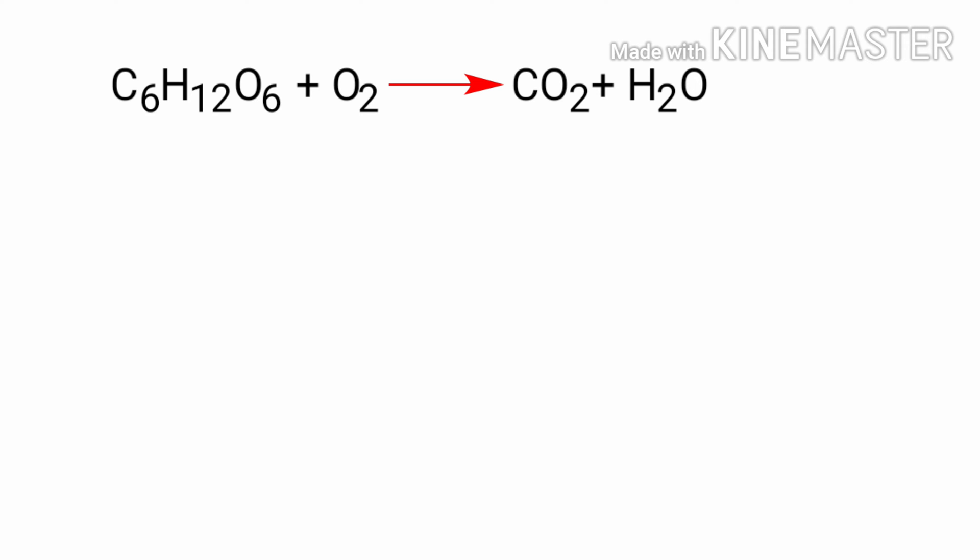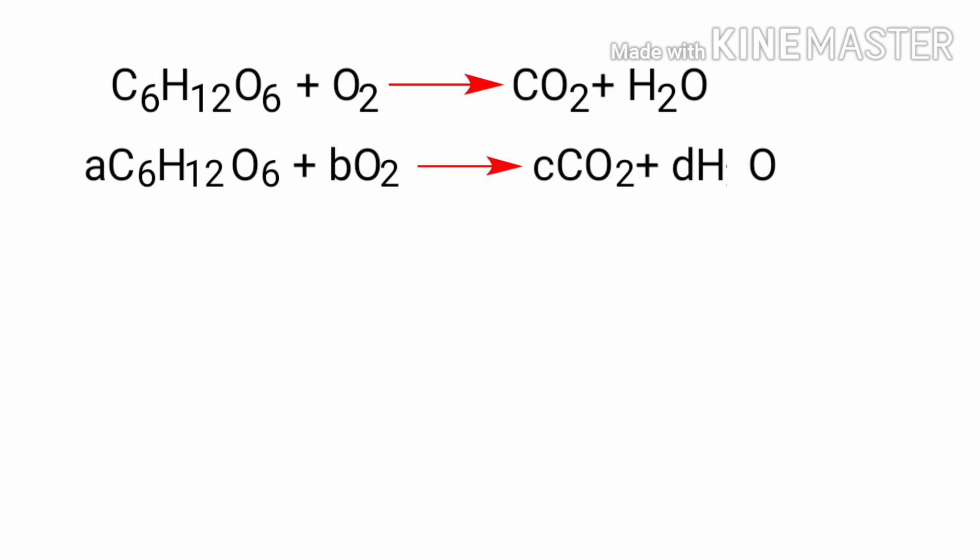The first thing we do is give each compound a letter coefficient. So we write: A·C6H12O6 plus B·O2 gives us C·CO2 plus D·H2O.